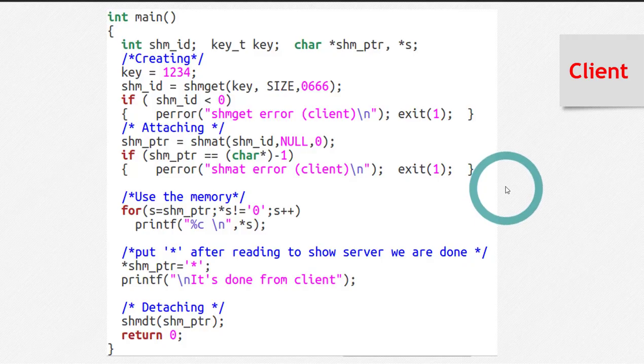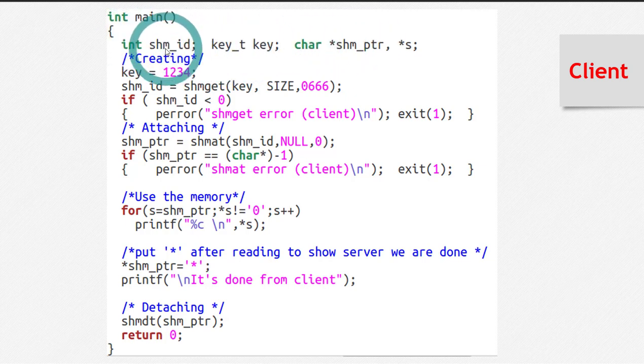Now let's look at the client side code. So let's see line by line. I have declared an integer variable for shared memory ID, a key, and then two pointers of character pointer type. And then here I have created the shared memory through the system call shmget and notice that I haven't used the flag IPC_CREAT in this code here.